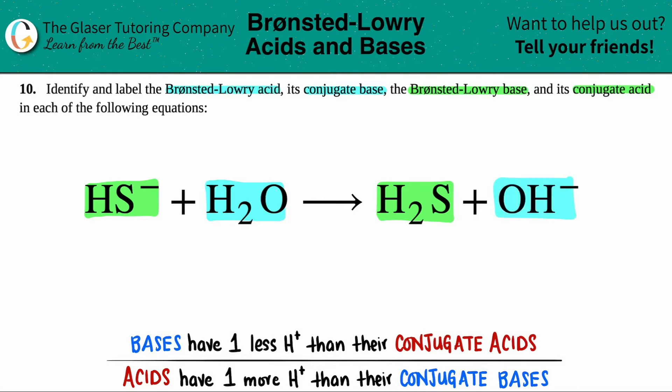The second thing to do is always to just get the word conjugate out of the way. Conjugate just means other or corresponding, and it's what you make from your acid and base. So the word conjugate is always going to be on the product side. So I can just get rid of that. This has to be a conjugate. This has to be a conjugate. I don't know whether it's an acid or base, but I know that it has to be a conjugate.